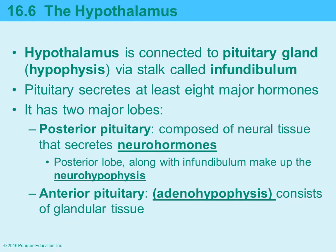We'll start with the hypothalamus. It is in the brain and you should already be familiar with it from the nervous system. It plays a role in both the nervous system and the endocrine system, and many organs function across multiple systems. The hypothalamus is connected to the pituitary gland by a thin stalk called the infundibulum.